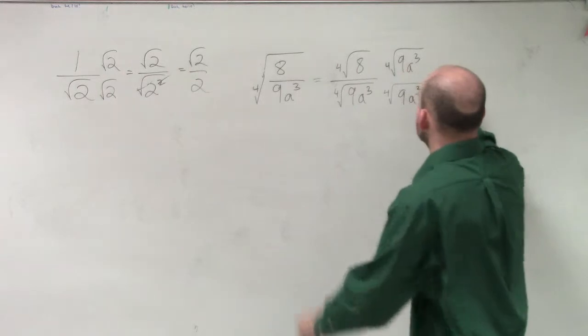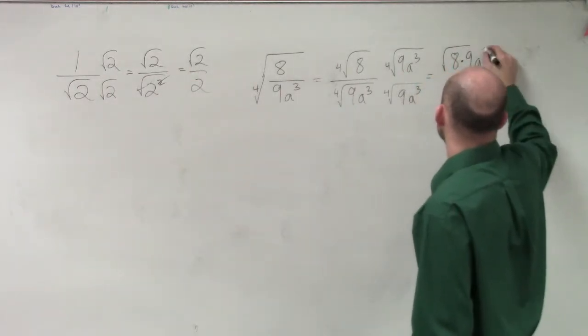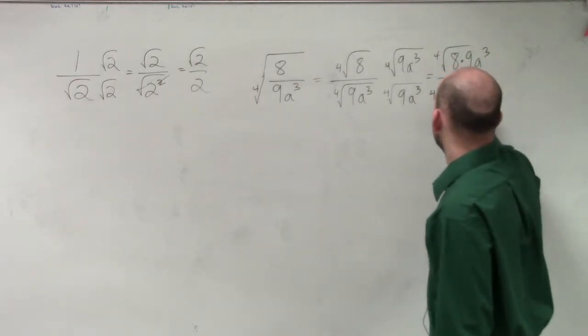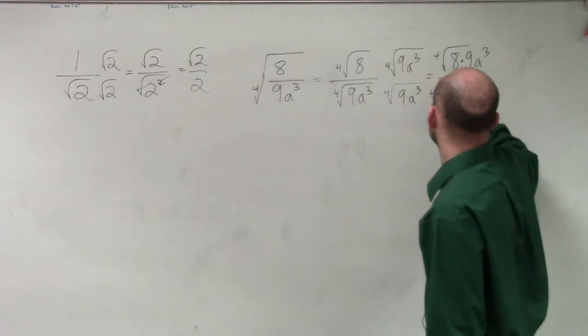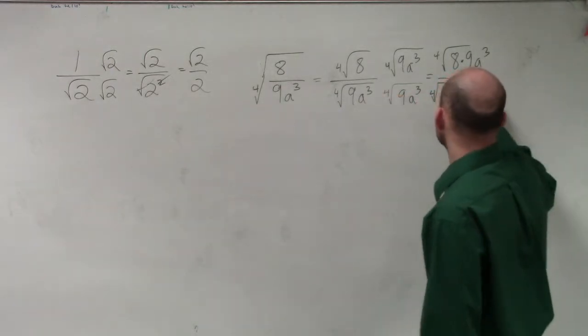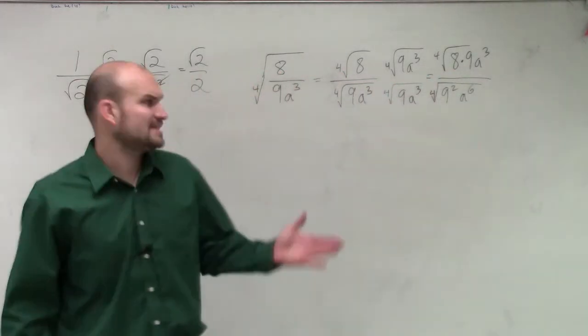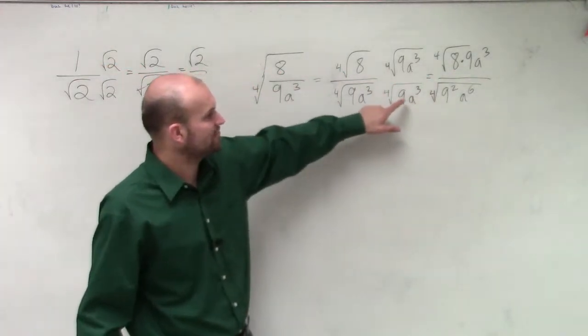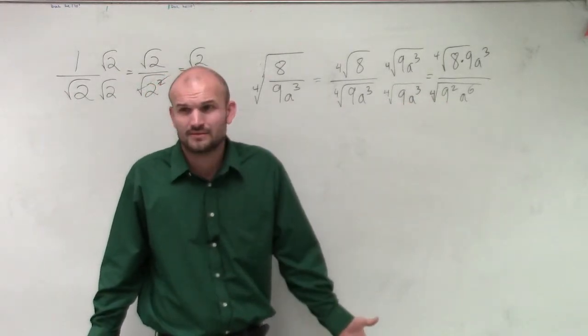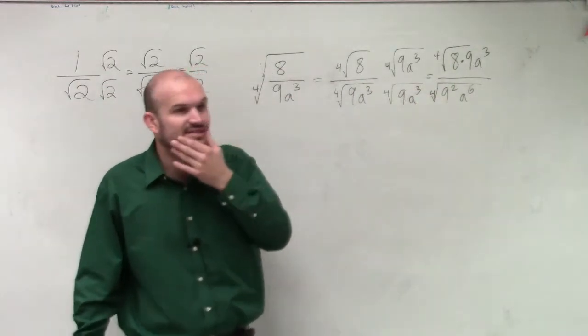Guys, when I multiply this across, I get the fourth root of 8 times 9a cubed. Then I have the fourth root of 9, 9 times 9 is 9 squared, and a cubed times a cubed is a to the sixth. Can you take what number multiplied by itself four times gives you 9 squared? Do we have that yet? No.